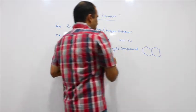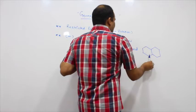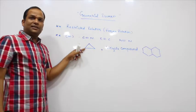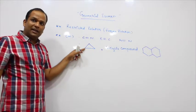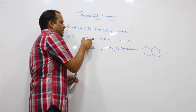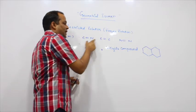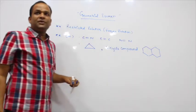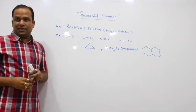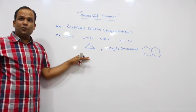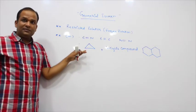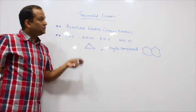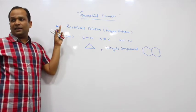So this can be a bicyclo compound, this can be a cycloalkane, carbon double bond nitrogen, carbon double bond carbon, or carbon double bond nitrogen. If you get these conditions, then there is a chance of formation of geometrical isomers.